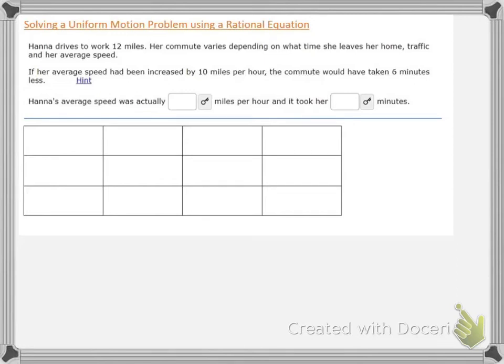In this video we are going to solve another uniform motion problem using a rational equation. Hannah drives to work 10 miles. Her commute time varies depending on what time she leaves her home, the traffic, and her average speed.